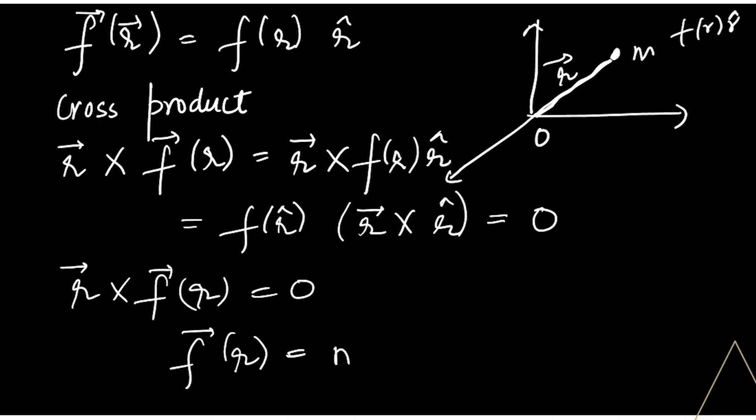And we know that F(R) can be written as m dv/dt. So let's substitute this F(R). This is equation number one, this is equation number two. Using equation number two in one, so R cross F(R) is m dv/dt.